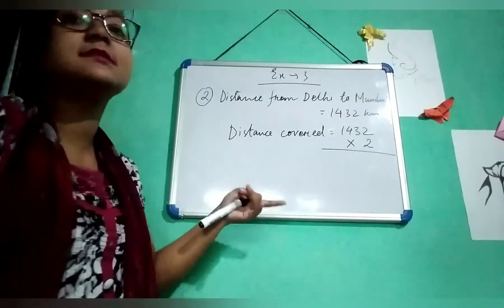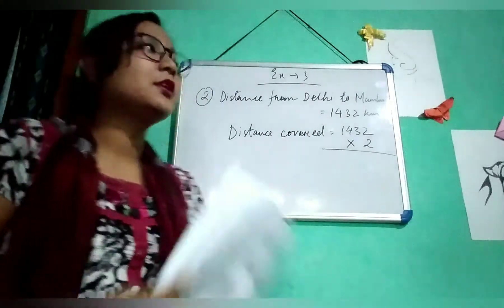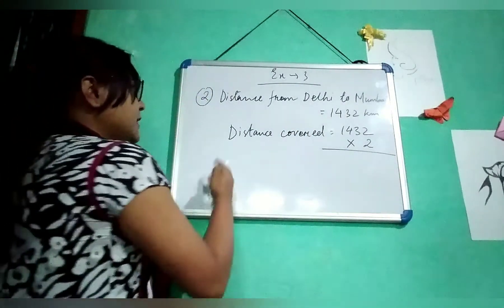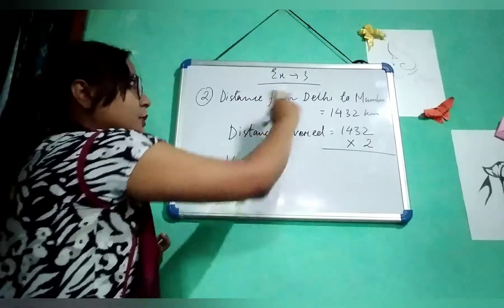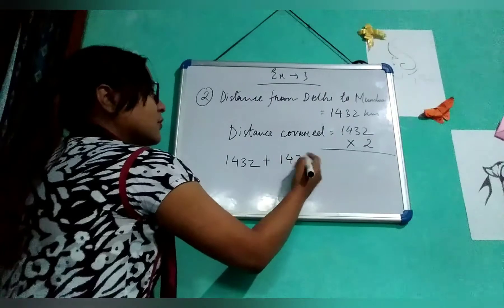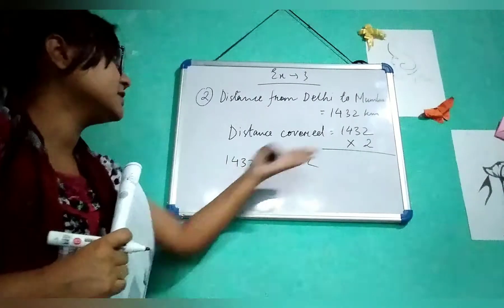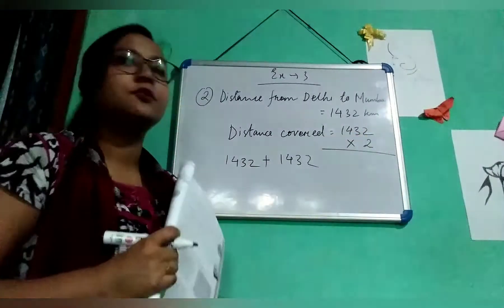How much distance he has covered will be multiplied with 2. Because if 1,432 he has travelled from Delhi to Mumbai, from Mumbai to Delhi will be the same distance, right? So this is repeating addition, which means 1432 into 2.